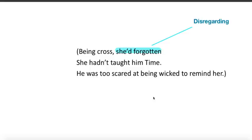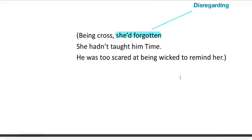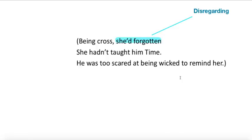This boy clearly doesn't understand what he's done. The vagueness of something very wrong tells us that he doesn't understand what he's done wrong. So the punishment is going to be ineffective, because he doesn't really understand why he's being punished. And to further support this idea that this is a criticism of the teacher, we have, being cross, she'd forgotten she hadn't taught him time. He was too scared at being wicked to remind her. So she's so angry, she's so worked up with him, that she's completely disregarded the fact that she hasn't taught him time. She hasn't done her job, that's her job. And she hasn't done it. And instead, she's given him a punishment that he doesn't understand. And it could be implied here that she almost rules with fear as well, the fact that he's too scared to tell her that he doesn't understand the term half past two, tells us that she again is an ineffective teacher, to the point that her student is too afraid to tell her that he doesn't understand. So this evokes sympathy for the child.